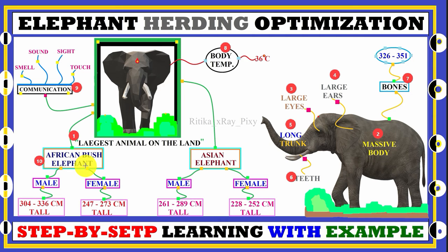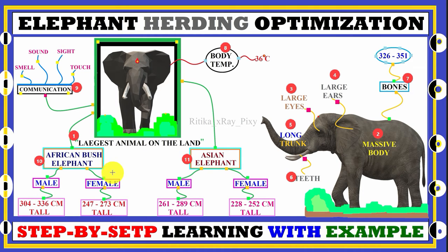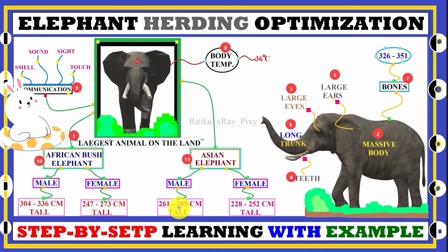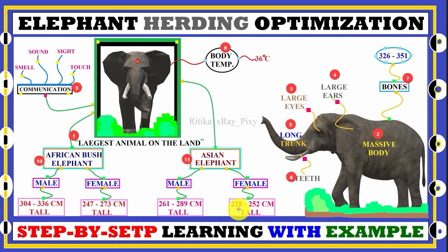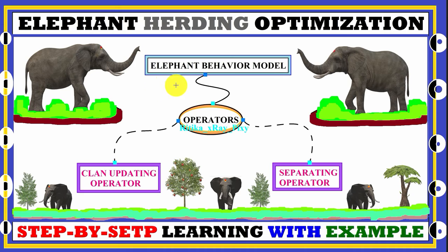Elephants can communicate using sound, sight, touch, and smell. The African bush elephant is considered the largest elephant species worldwide. African male elephant height is 304 to 336 centimeters, and female height is about 247 to 273 centimeters. The Asian male elephant height is 261 to 289 centimeters, and female Asian elephant height is 228 to 252 centimeters.